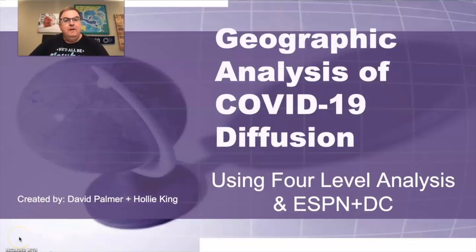Hello. How's everybody doing today? What we're going to do today is talk about the COVID-19 diffusion. I think you've heard of it in the news lately. But what we want to do is put a geographic analysis spin on that. We're going to apply four-level analysis using the ESPN-DC grid to help us make sense of this. But before we do that, I want to thank Ms. Holly King at Eagle Crest High School for helping me with this video, and I hope you find it useful.